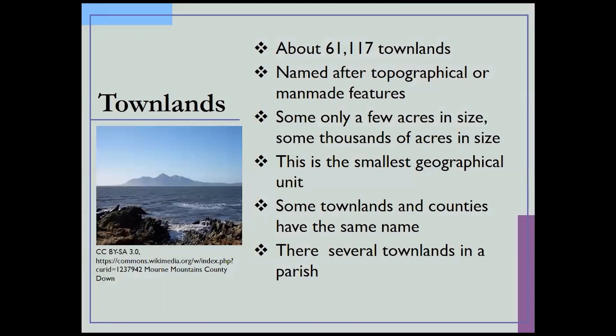The smallest unit we have are townlands — there are about 61,000 of them. They were named after topographical or man-made features, and there is no rhyme or reason to them. They could have been a few acres in size or they could be a thousand acres. Sometimes the townland and the county will have the same name, and sometimes the townland, the county, and a city will share the same name — Dublin is one that pops up constantly. So you need to be aware of whether the context of the record is referring to the townland, a town, a county, or a parish.